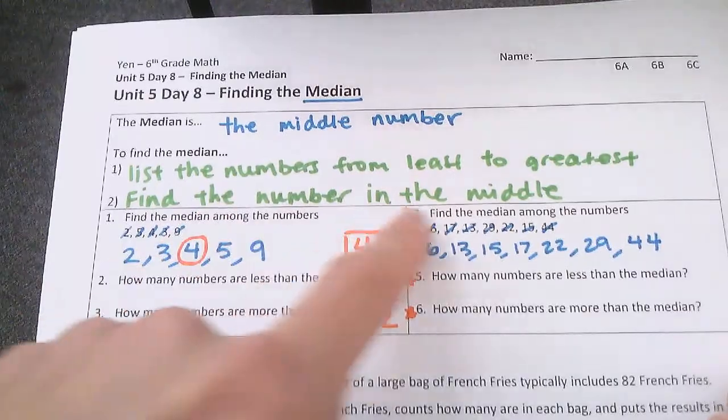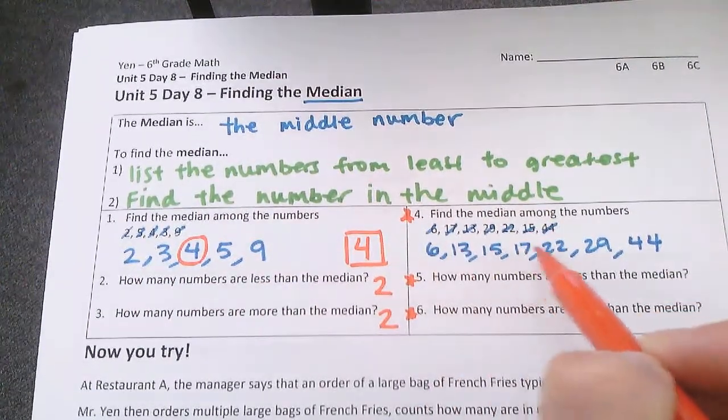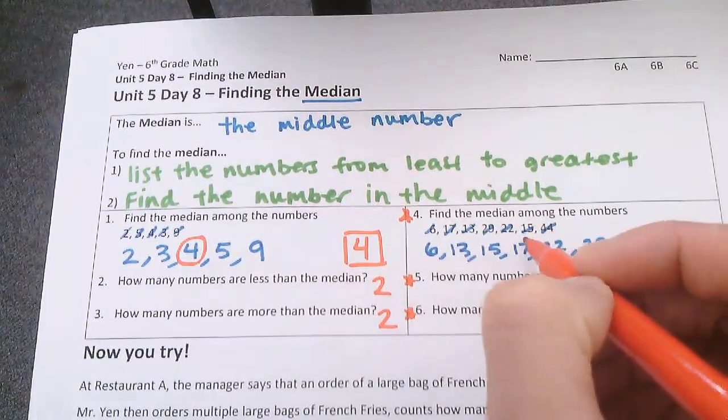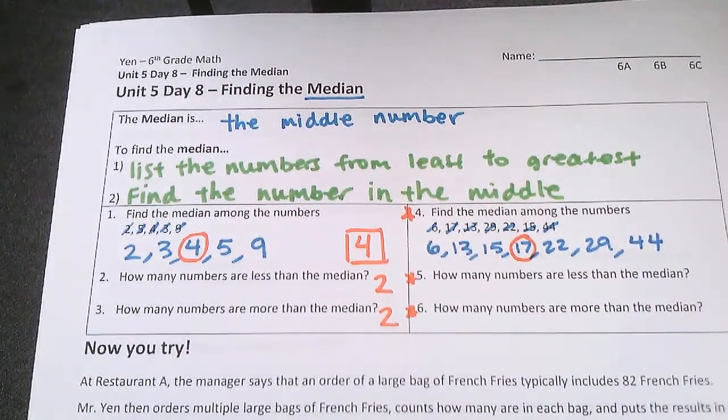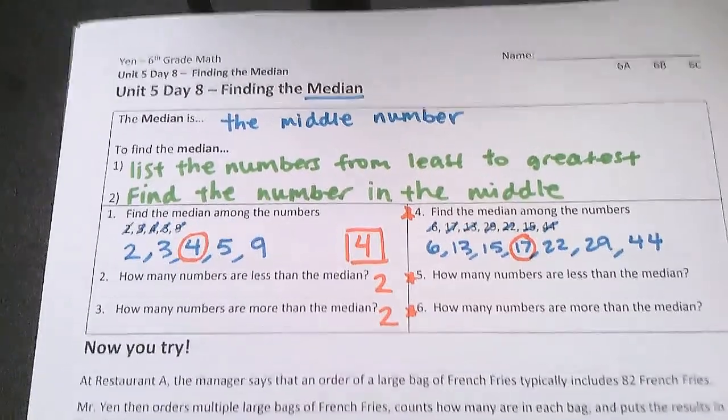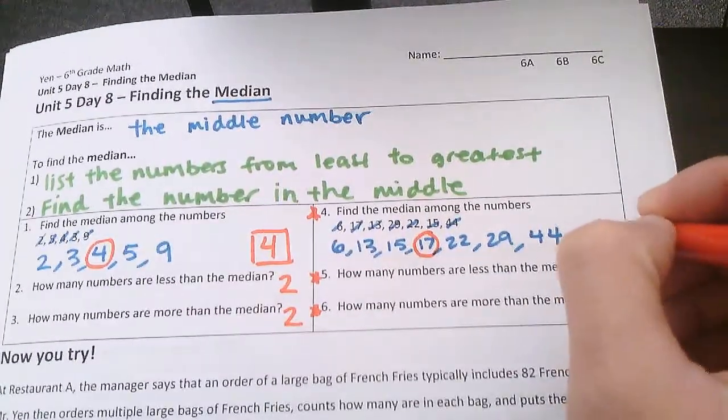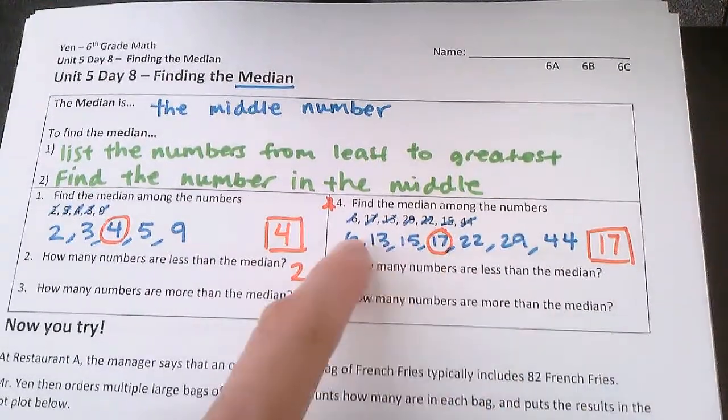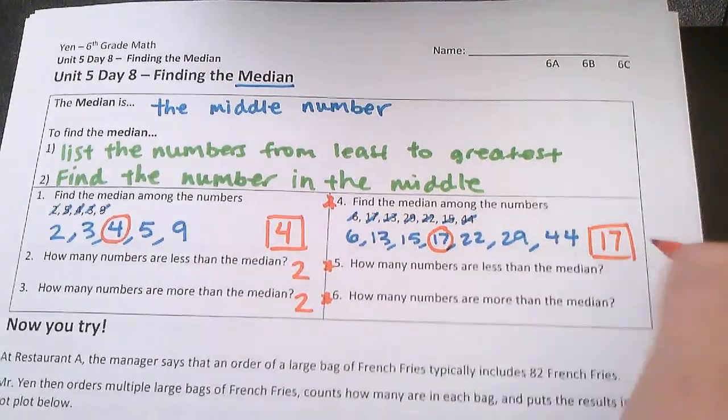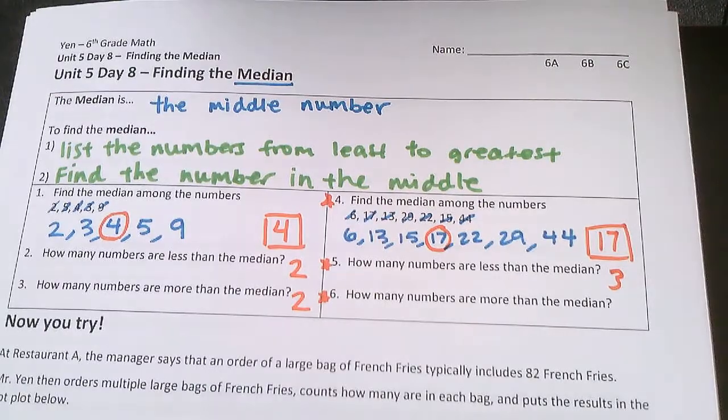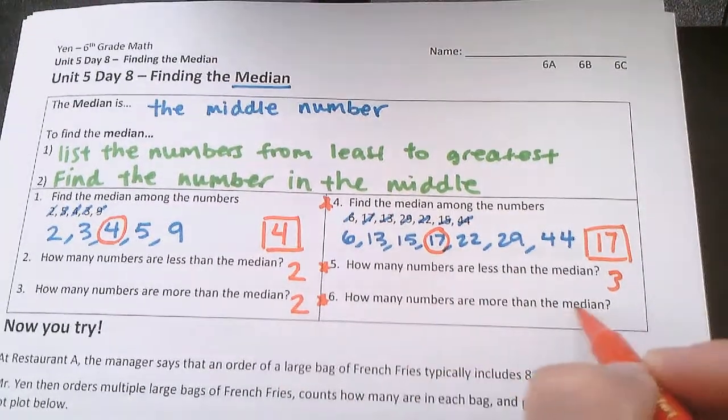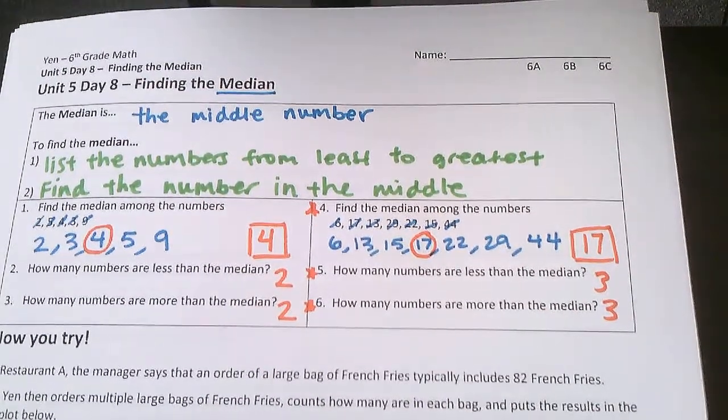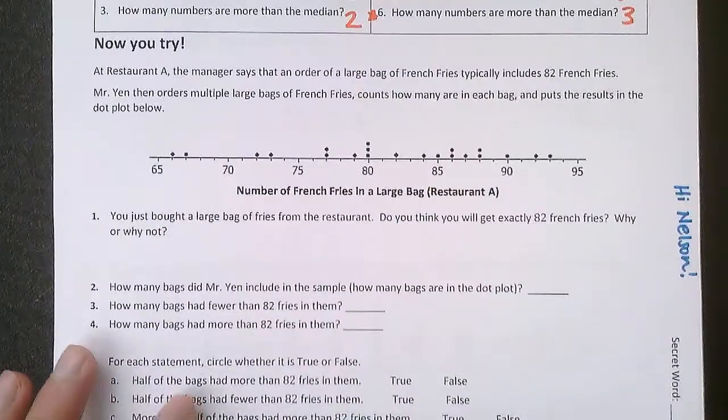Step 2 then is to find the number that is right in the middle. There are 1, 2, 3, 4, 5, 6, 7 numbers. So the middle number would be the fourth one. So 17 is the median, right in the middle. How many numbers are less than the median? That's these three numbers.